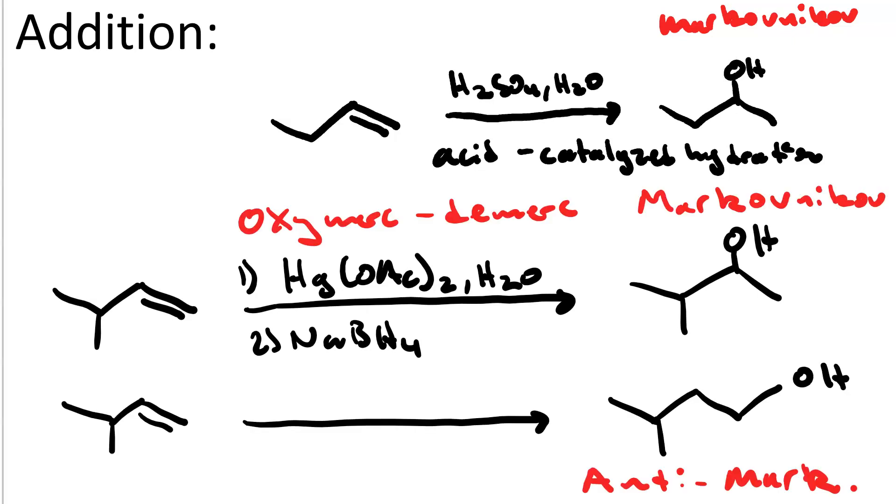What process would we use to get the anti-Markovnikov alcohol? We'd use hydroboration-oxidation. The hydroboration step is accomplished with borane and tetrahydrofuran. The oxidation step is accomplished with a mixture of hydrogen peroxide and sodium hydroxide. So these are three ways to make an alcohol via addition.